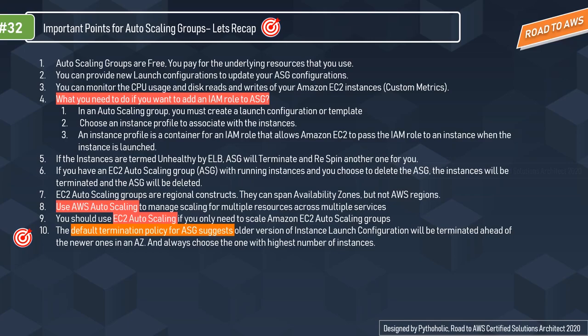If instances are deemed unhealthy by the Elastic Load Balancer, the Auto Scaling Group will terminate them and re-launch new ones. Importantly, if you have an EC2 Auto Scaling Group with running instances and you choose to delete the auto scaling group, the instances will be terminated and the auto scaling group will be deleted as well.